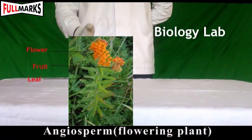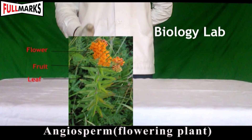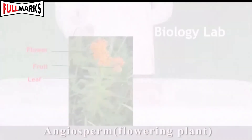6. Angiosperm. Characteristics of Angiosperm: The flowering plants are called angiosperms. The flower is a reproductive organ. The plant body is well differentiated into roots, shoots, leaves, flowers, and fruits. The seeds are enclosed in fruits. The root system may be taproot or adventitious. Reproduction takes place in the flower.